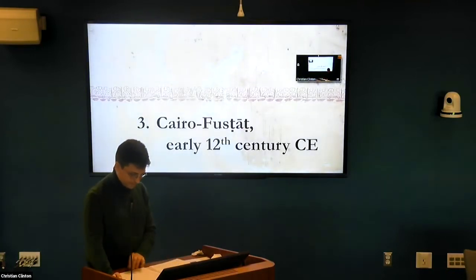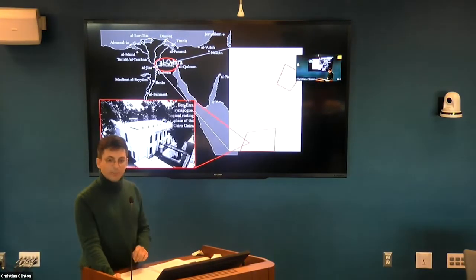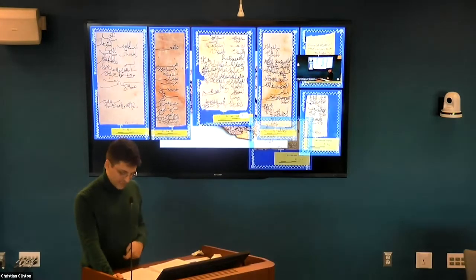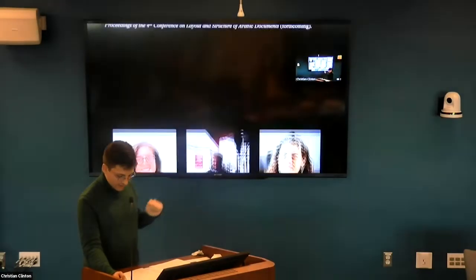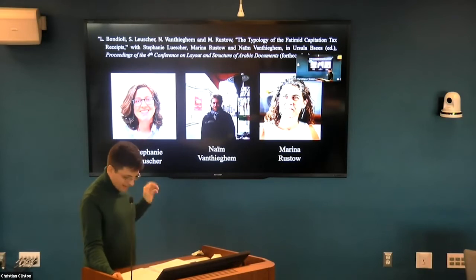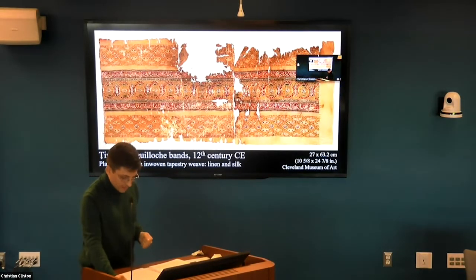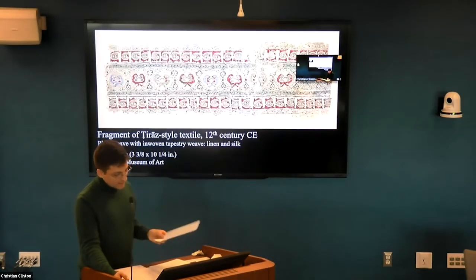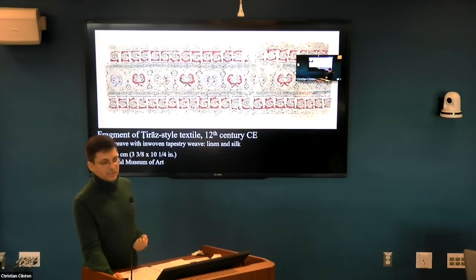My third case study is Cairo-Fustat, the dynastic capital, in the first half of the 12th century. Here we have documents of a different kind — from the Cairo Geniza, a repository of 400,000 discarded papers that survived in the attic of the Ben Ezra synagogue. Among these we find hundreds of capitation tax receipts, a large corpus of 12th-century receipts still unpublished, on which I have worked as part of a team of four. The most common profession of taxpayers was khazzaz — silk worker — and in some cases the receipts specifically gloss this as ajir khazzaz, 'employee silk worker,' meaning we are dealing not with independent artisans but dependent workers of the same type found in Tinnis.